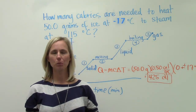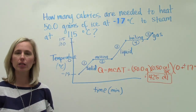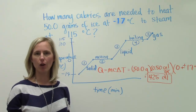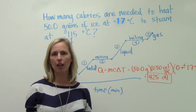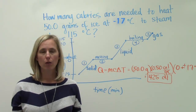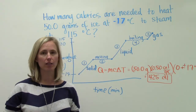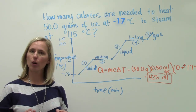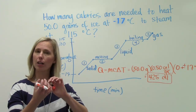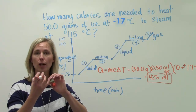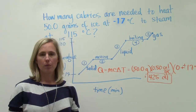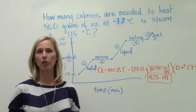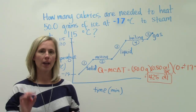Now let's go on to the melting point. One might say let's use mcΔT again, but there's a problem. We know that the temperature is not changing — we're at a plateau. If we try to use delta T, delta T would give us a change in temperature of zero, which means the heat absorbed would be zero. But we know that's not true. During the melting point, the molecules of water are going from a very rigid structure where they are merely vibrating to a loose structure where they are weaving in and out of each other. Energy is being added to change their positions, so we need a different equation.